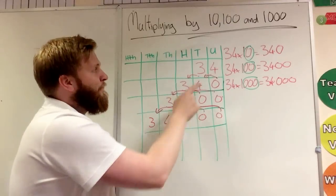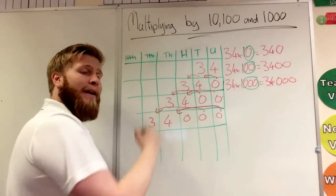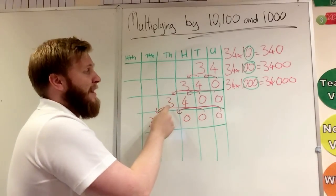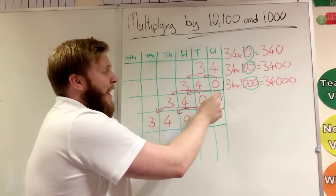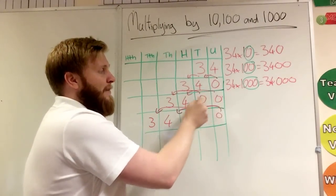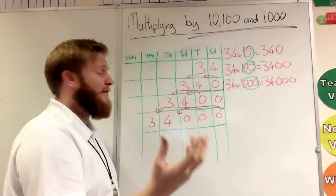When we're on a hundred, we're moving them up two places to the left in place value. So our three gets a hundred times bigger and becomes 3000. And our four becomes a hundred times bigger and becomes 400. And we have to fill in the spaces with zeroes. That's why some people think we just add the zeros.